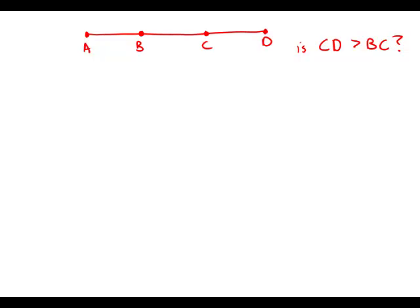In the figure, is CD greater than BC — so is the segment on the end greater than the middle segment? Since this is a geometric diagram, it's drawn to scale, and all three of them look approximately equal. However, we'd have no guarantee that they're exactly equal; it may be that one is slightly bigger or slightly smaller than the other, so we don't know.